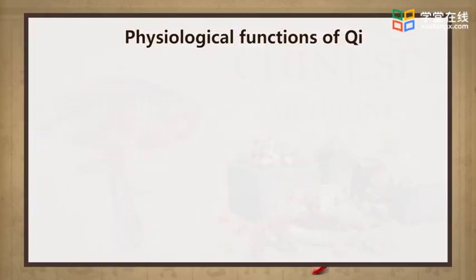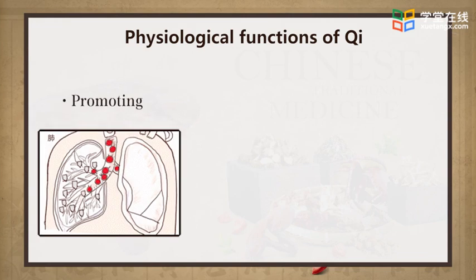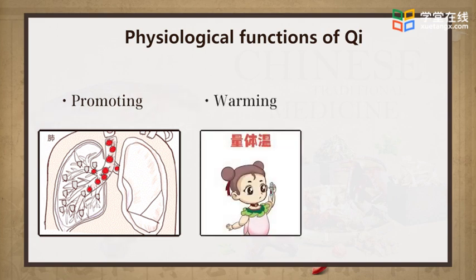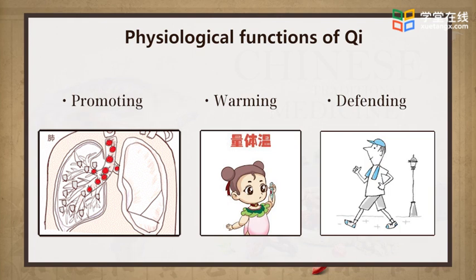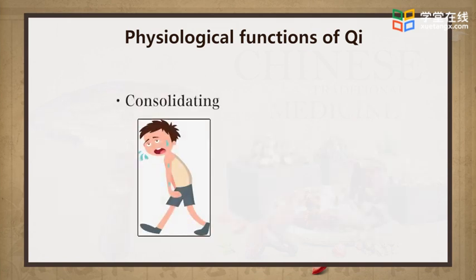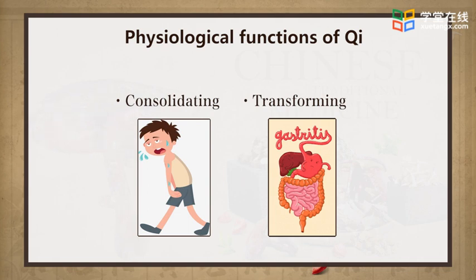The physiological functions of Qi are as follows. First, Qi has a promoting function to stimulate the activities of viscera and tissues. For example, heart Qi promotes blood circulation, spleen Qi promotes digestion, and so on. Second, Qi has a warming function to maintain constant body temperature, as well as sustained circulation of blood and body fluid. Third, Qi has a defending function to defend invasion of external pathogens by consolidating the body surface. Fourth, Qi has a consolidating function to consolidate body fluid to avoid loss, and to consolidate viscera to maintain a fixed location. Fifth, Qi has a transforming function to promote metabolism and transformation among essence, Qi, blood, and body fluid.